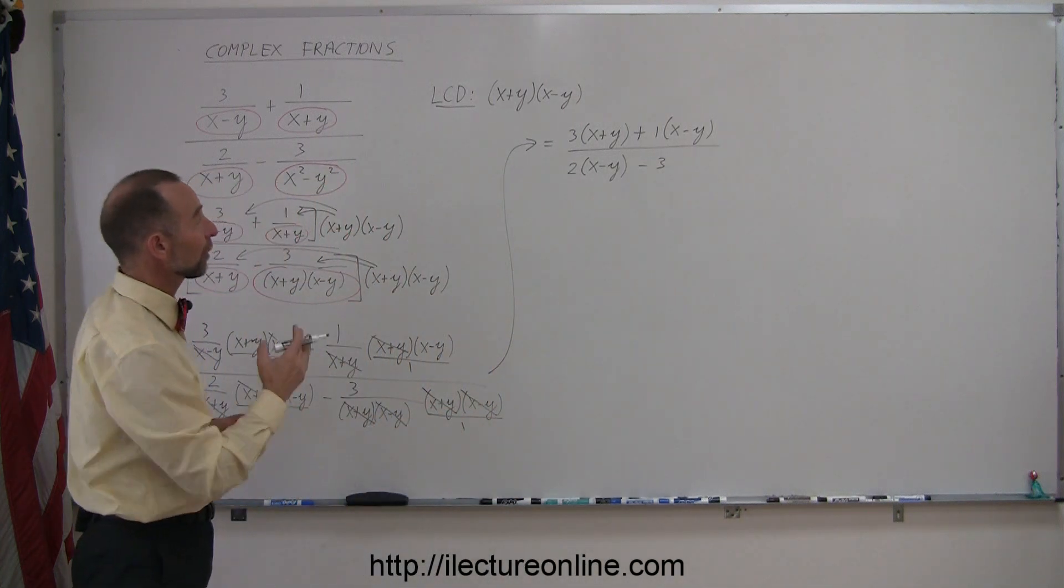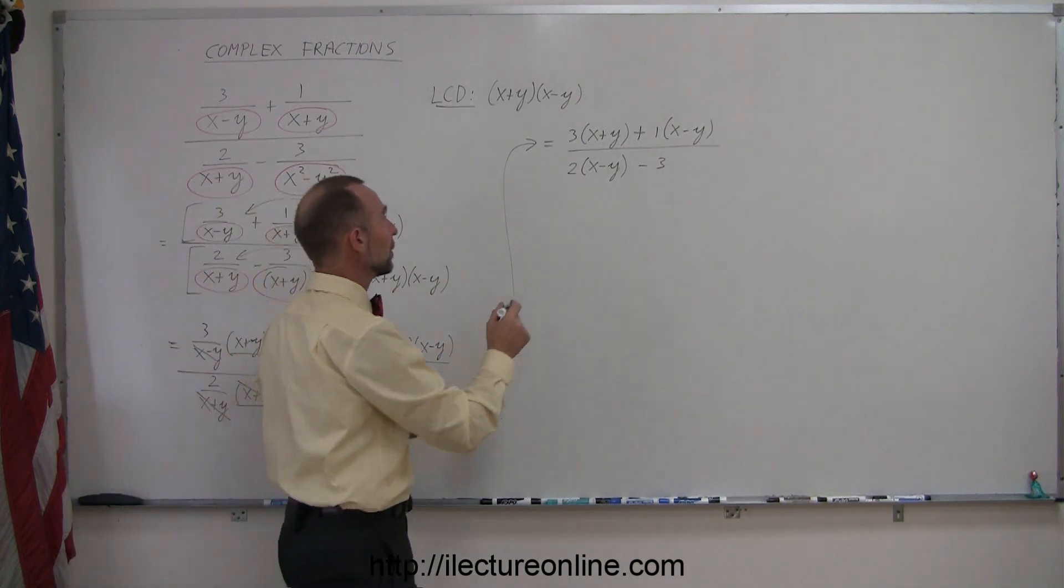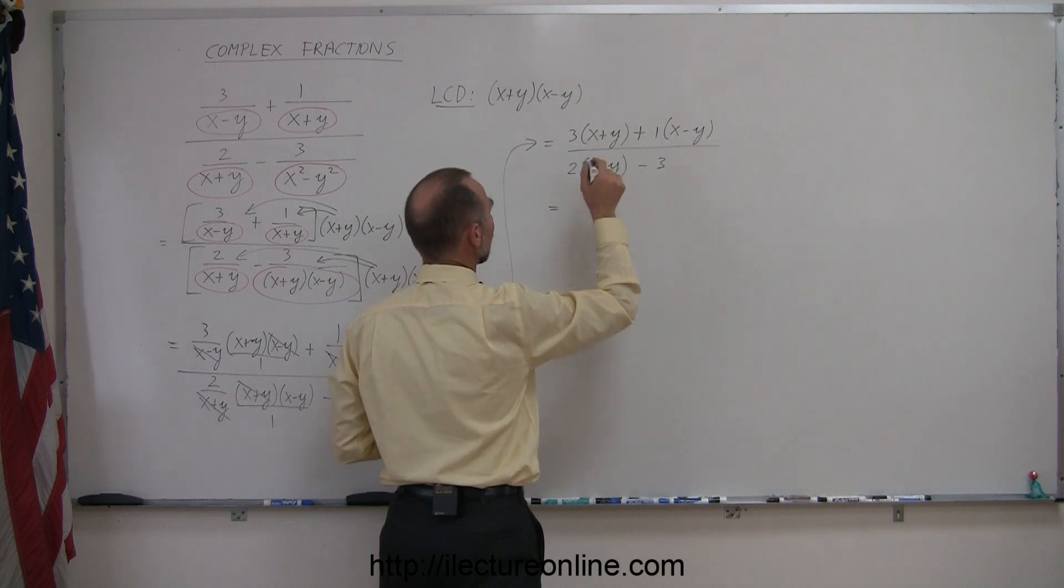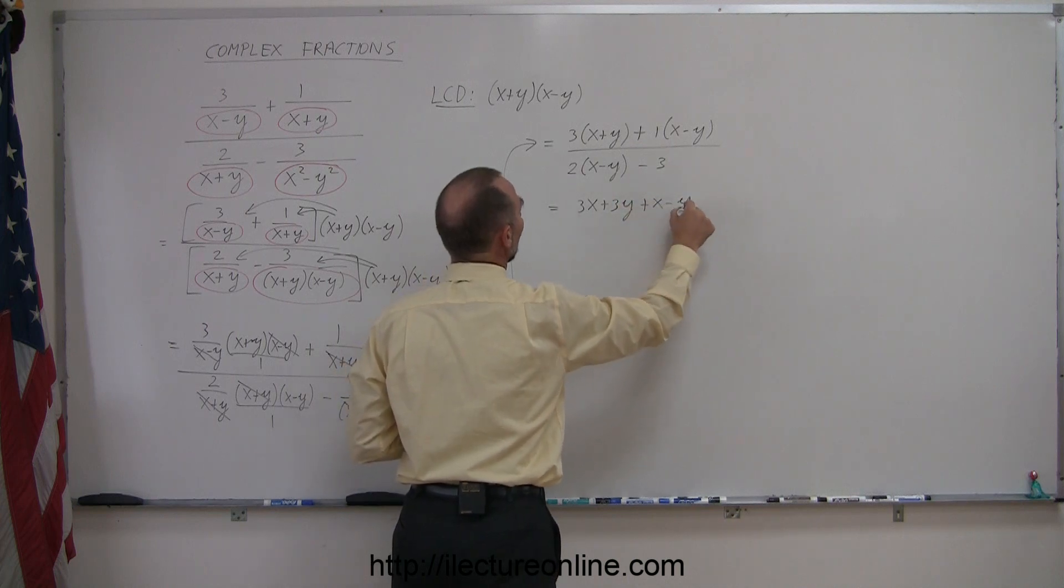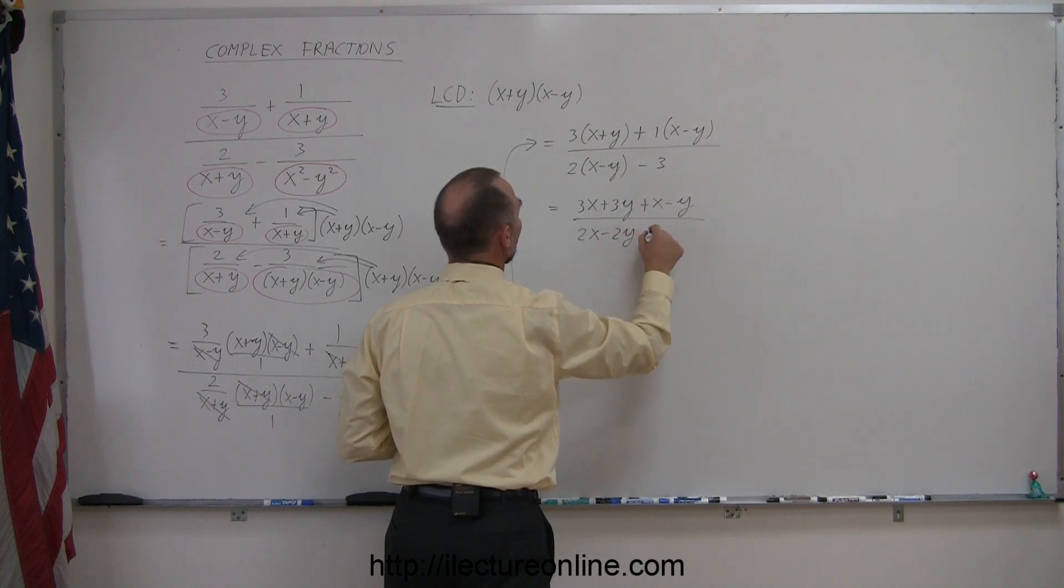And now, to continue, we simply have to get rid of the parentheses, so we distribute the numbers with the quantity inside a parentheses, so we get 3x plus 3y plus x minus y divided by 2x minus 2y minus 3.